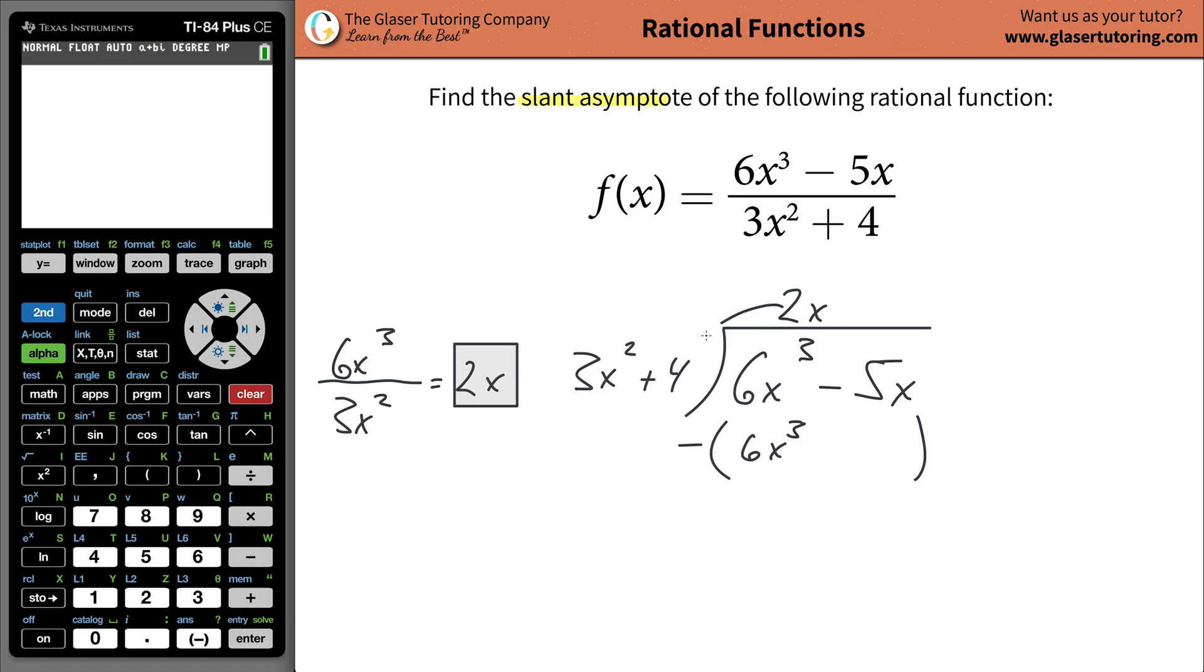Then you're going to take the 2x, multiply it by a positive 4, and that should be a positive 8x. Now there's no guarantee that anything will match up from here on out. So what you're going to do is you're going to take the negative sign then before you do anything and distribute it to each of those two terms. So the 6x cubed and the 8x both become negative.